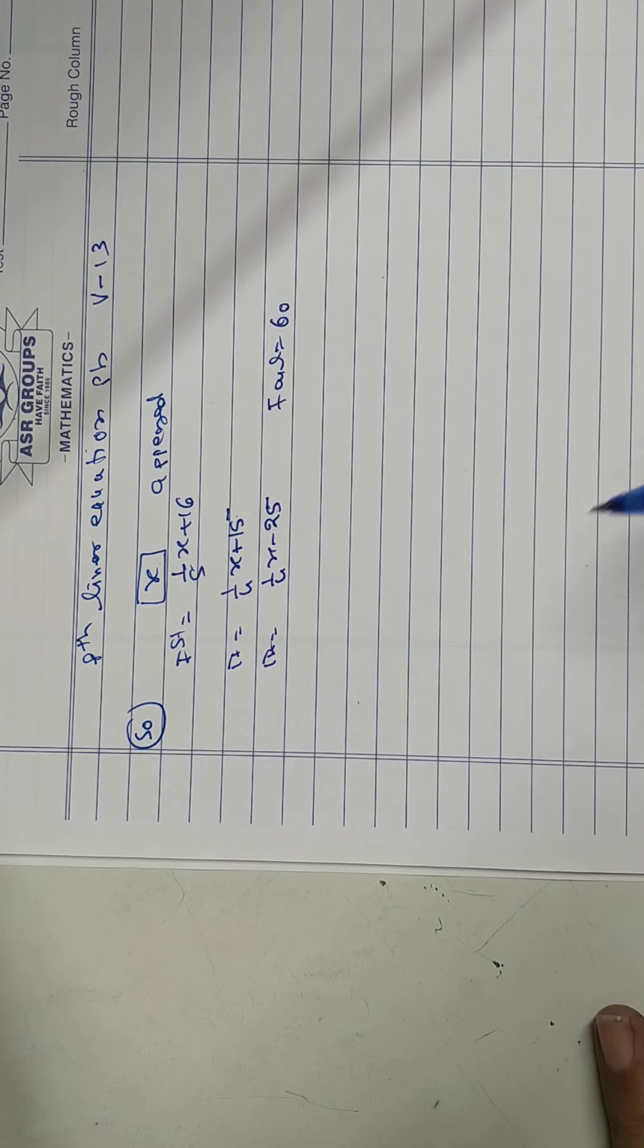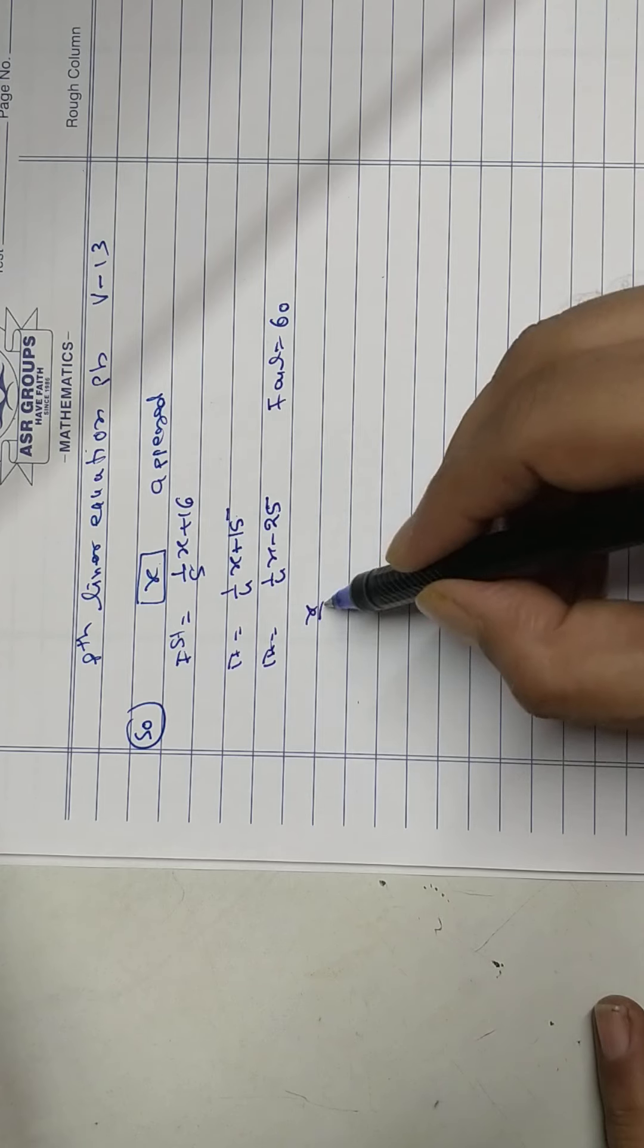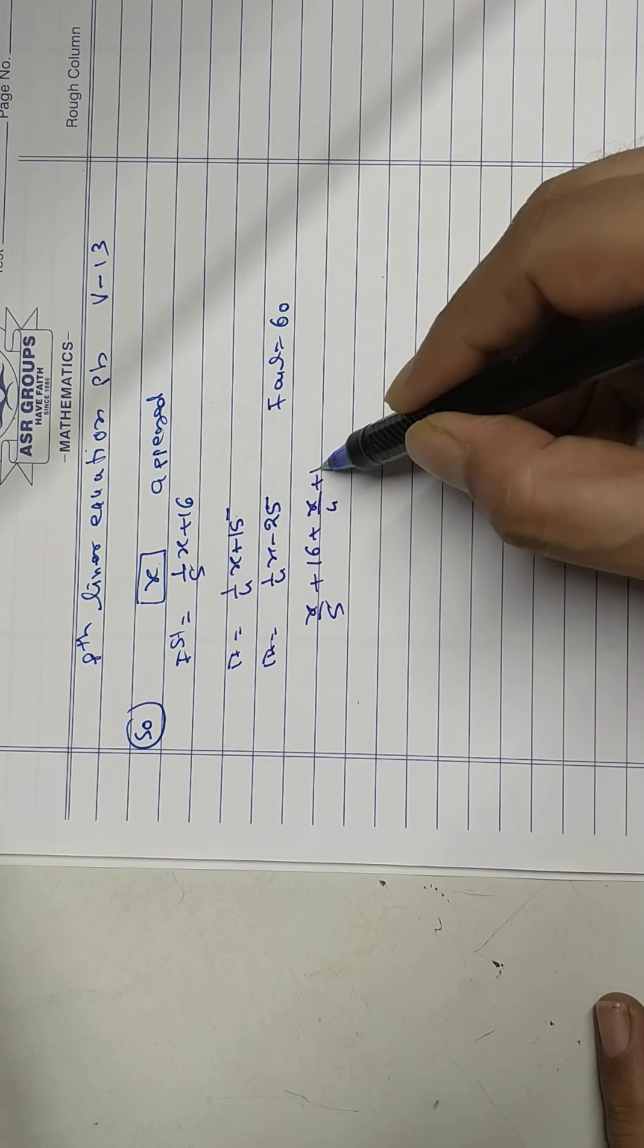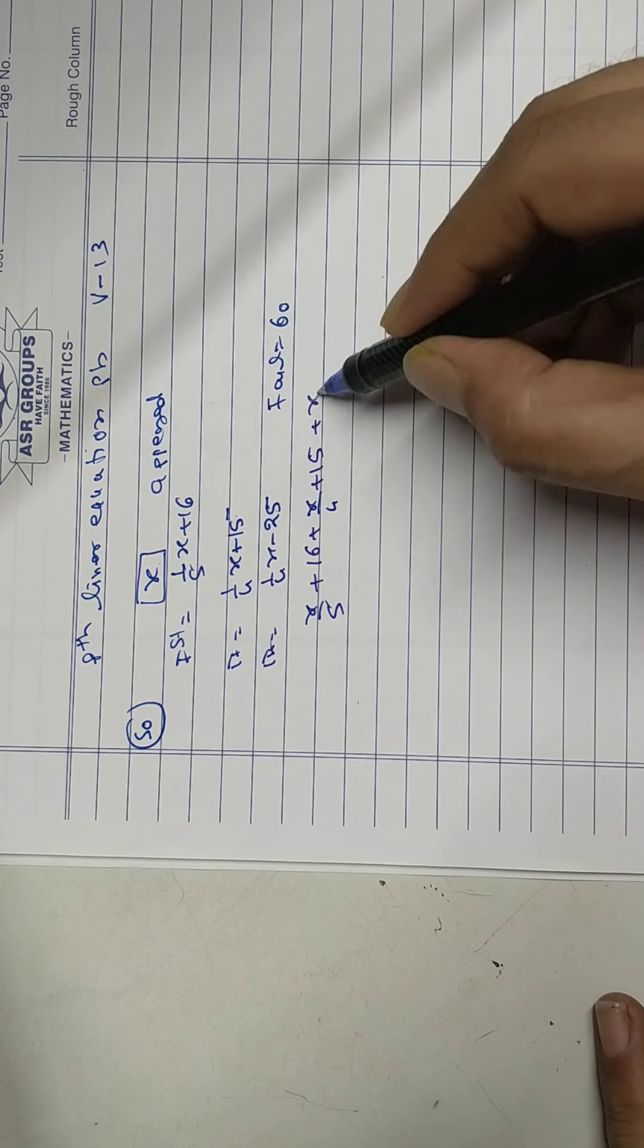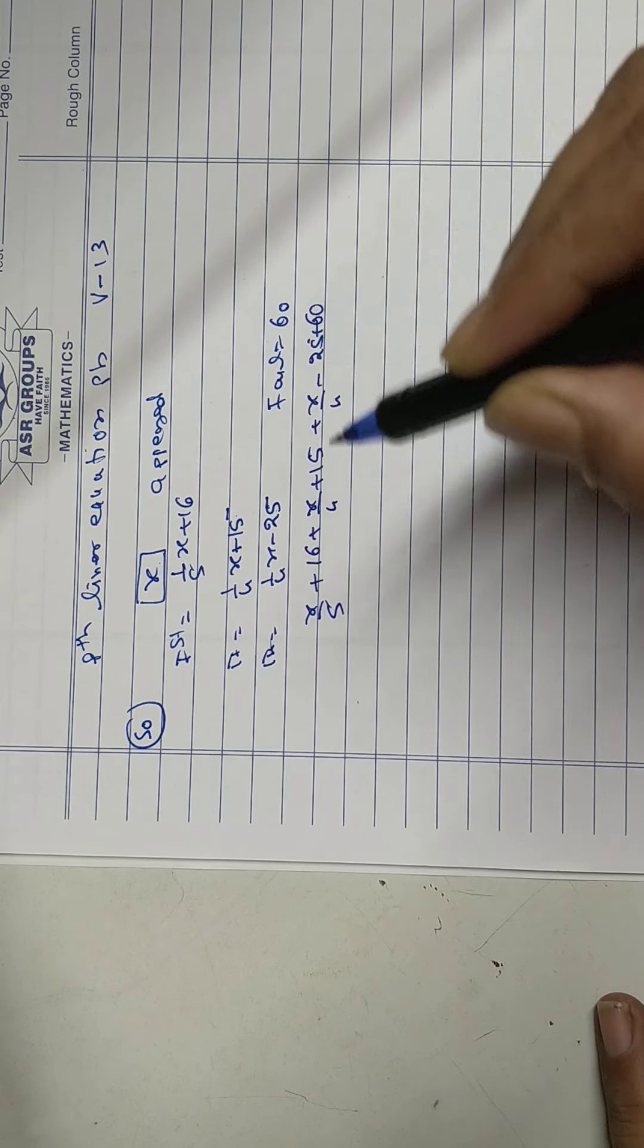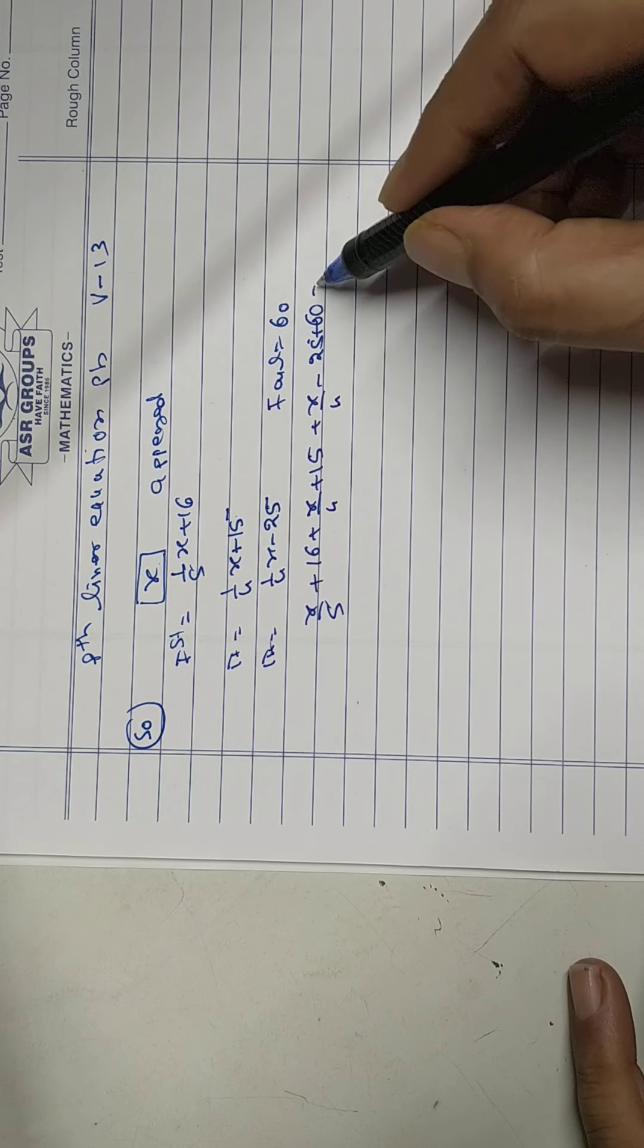So x upon 5 plus 16, x upon 4 plus 15, x upon 4 minus 25 plus 60 equal to x.